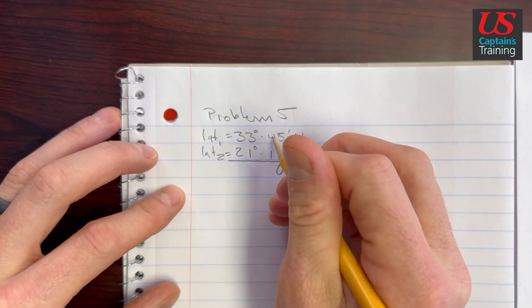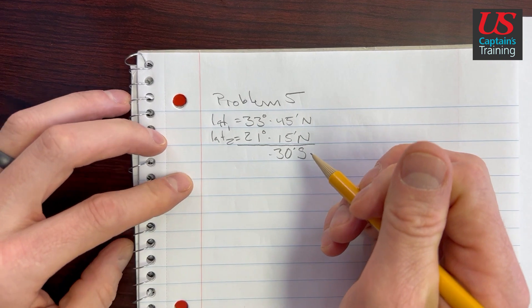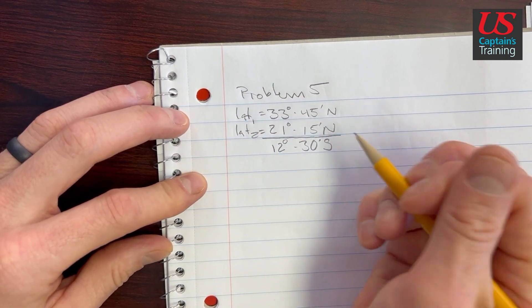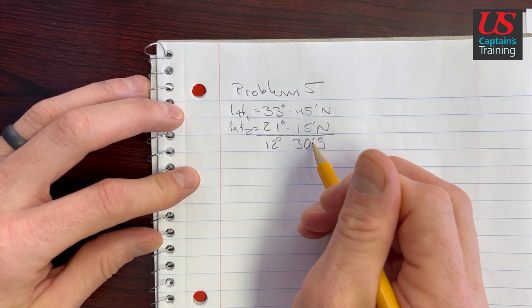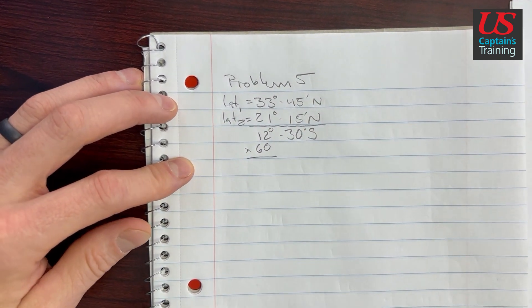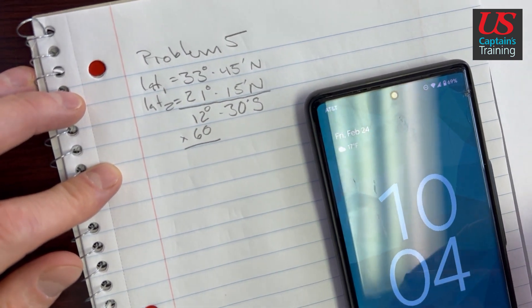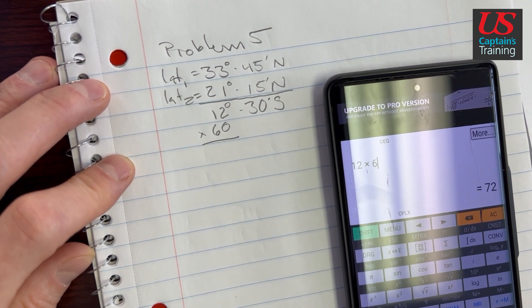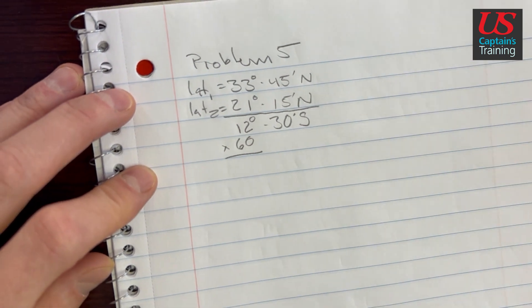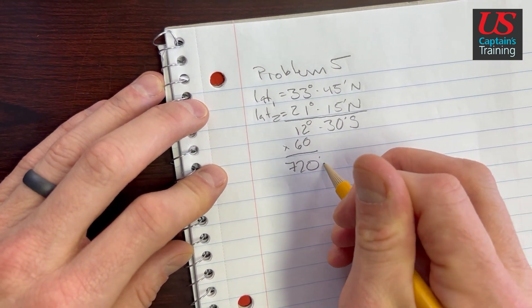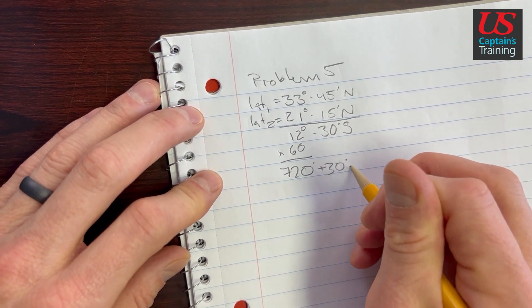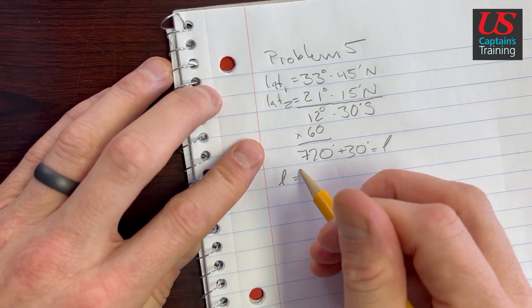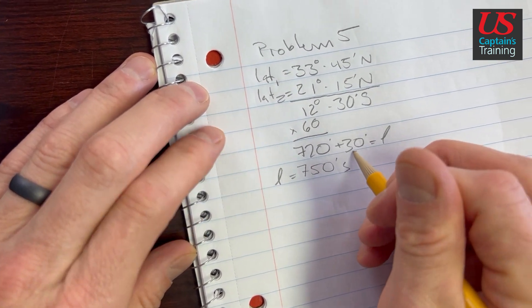So this is going to be south. 45 minus 15 is 30 minutes. And then 33 minus 21 is 12 degrees. We're going to turn degrees into minutes by multiplying by 60. 12 times 60 equals 720 minutes, and then we add 30 minutes. So little l equals 750 minutes south.